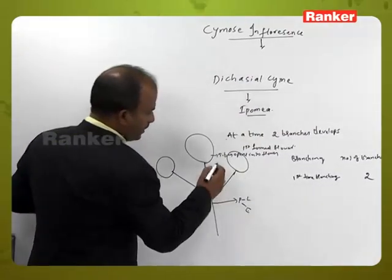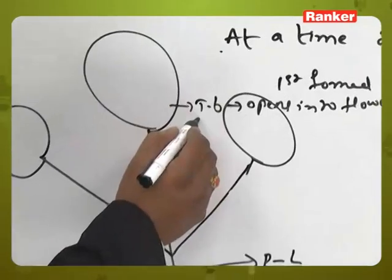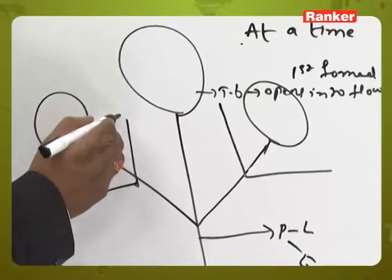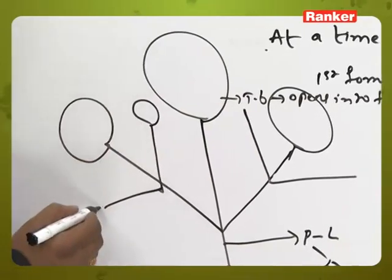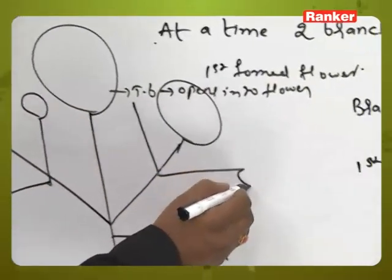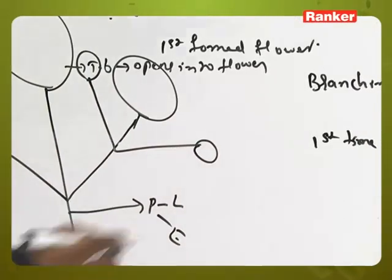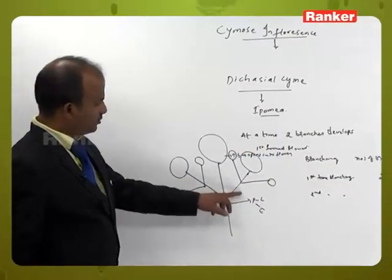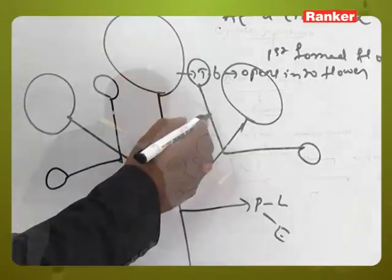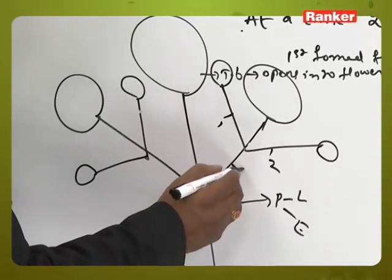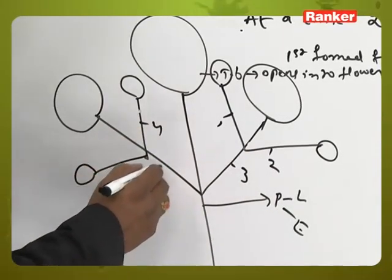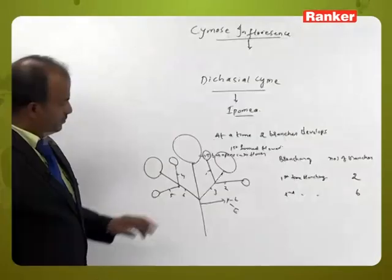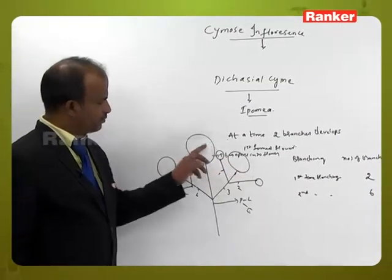Second time branching: two branches develop from each existing branch. Total branches become six, and seven flowers are present. Third time branching: again two branches develop from each. Total branches become fourteen and fifteen flowers can be seen in dichasial cyme.